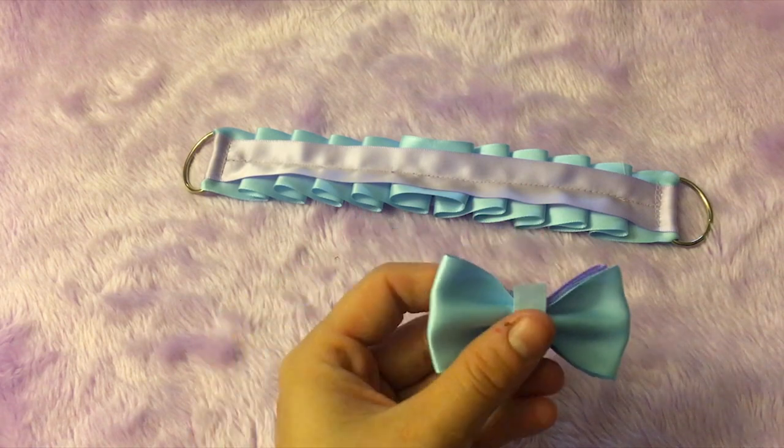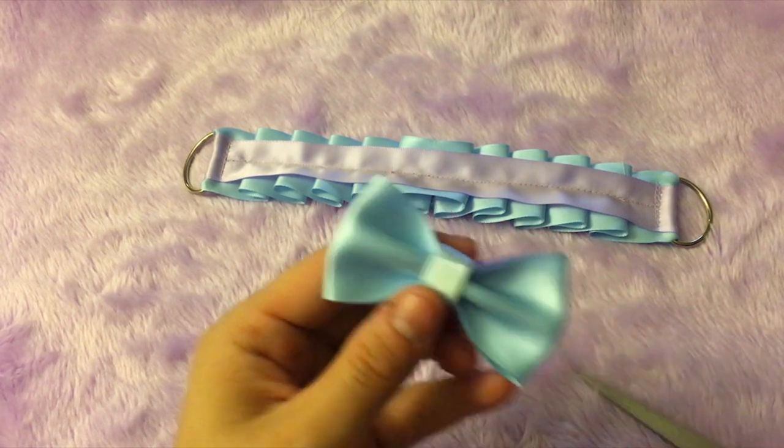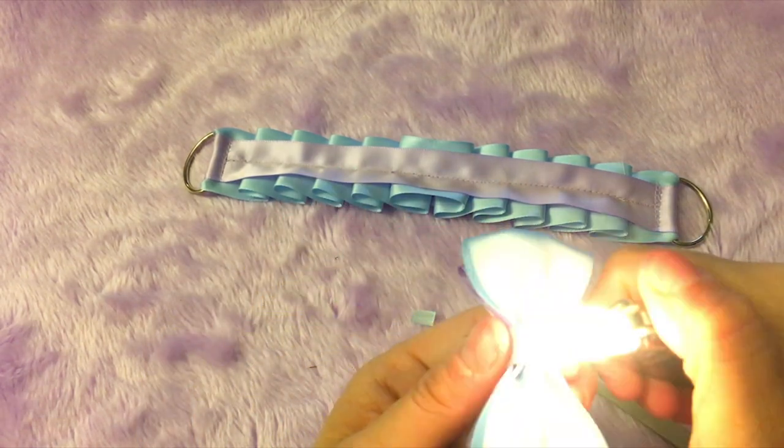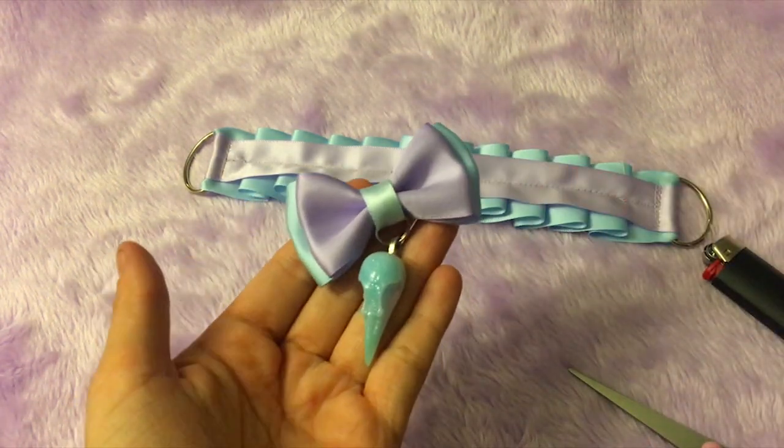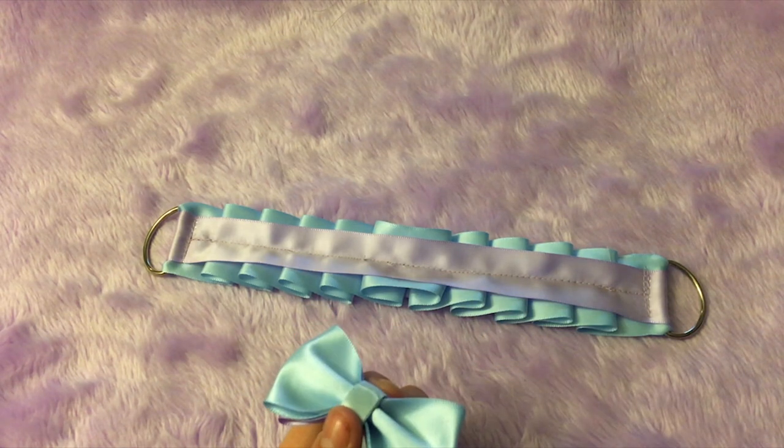If you have any extra ribbon at the back sticking out, cut it and then burn the end of the ribbon. Once you have completed the little tiny bow, it is time to attach it to the collar.